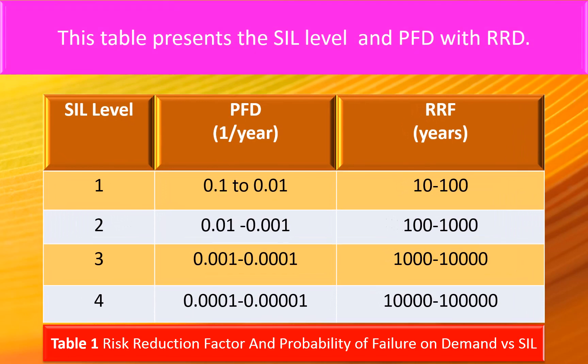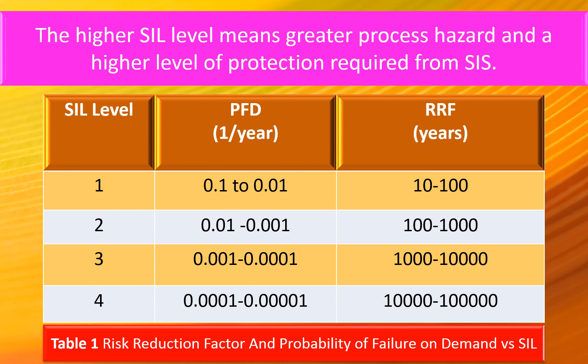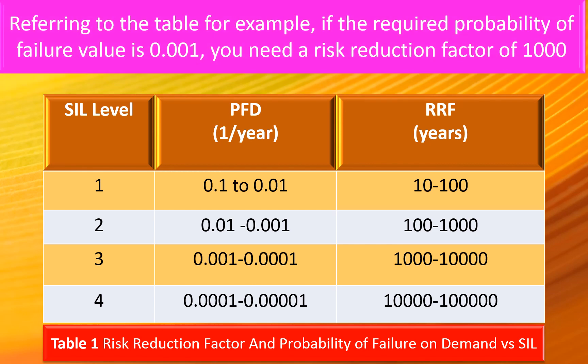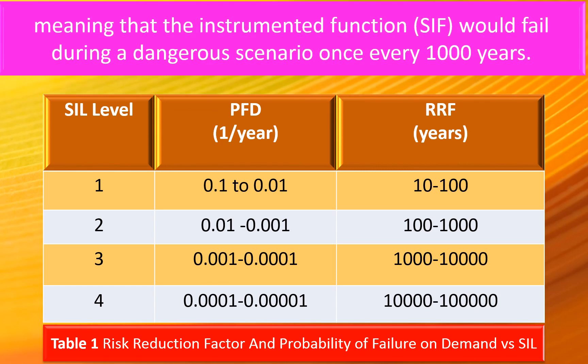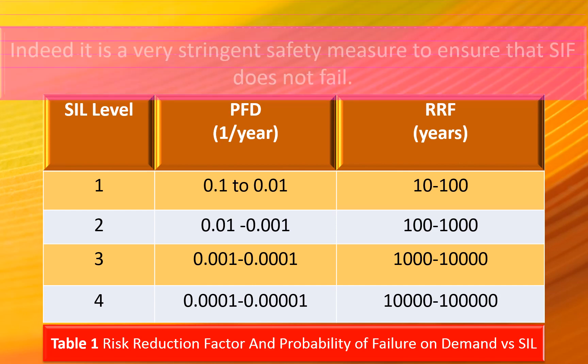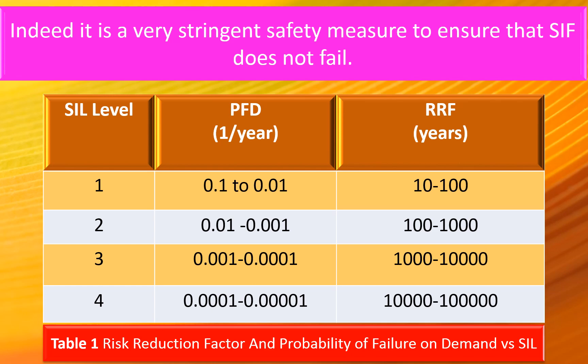The table presents the SIL level, the PFD, and the RRF. A higher SIL level means greater process hazard and a higher level of protection required from SIS. For example, if the required probability of failure value is 0.001 per year, you need a Risk Reduction Factor of 1000 — meaning that the Safety Instrumented Function would fail during a dangerous scenario once every 1000 years. This is a risk reduction measure to ensure that the SIF does not fail.